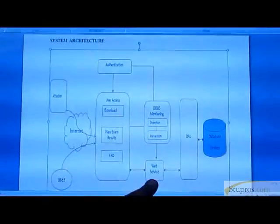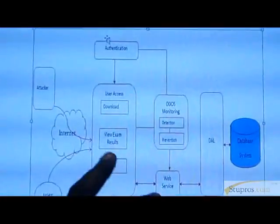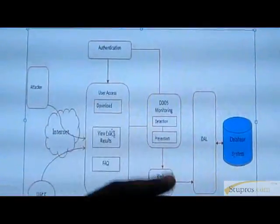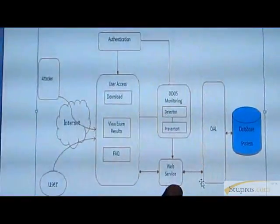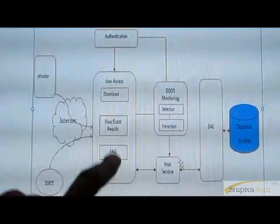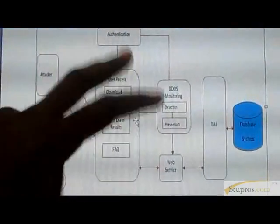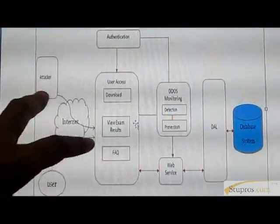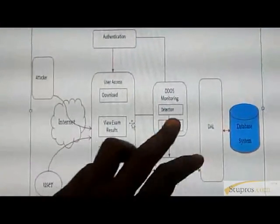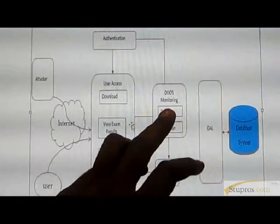Let's see the system architecture of this project. This is a client page and this is a server page. The client will request through the server, and the server will respond to the client. Suppose the client will act as a hacker, so that is DDoS monitoring.